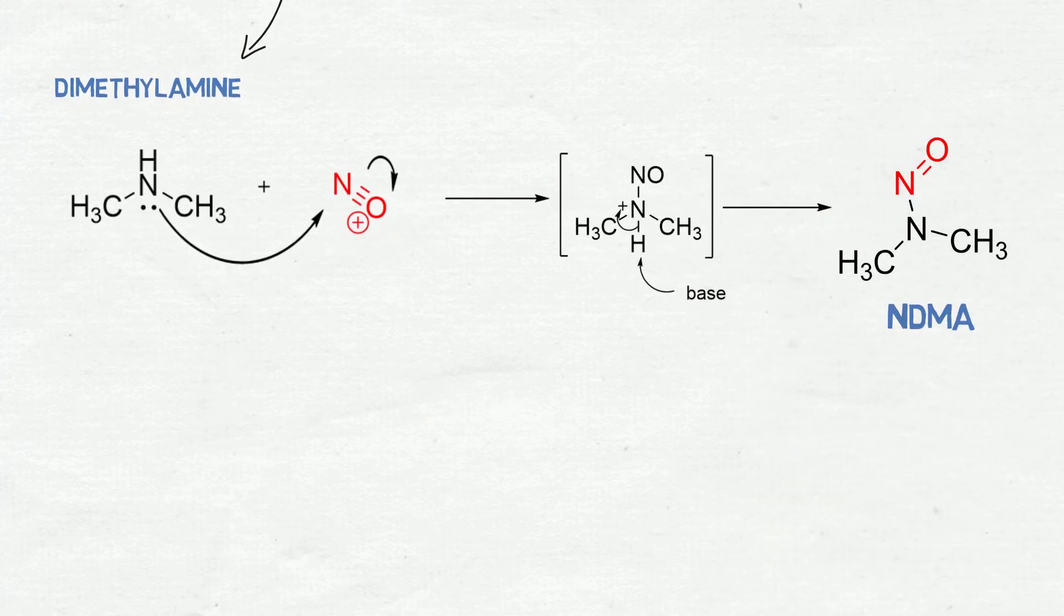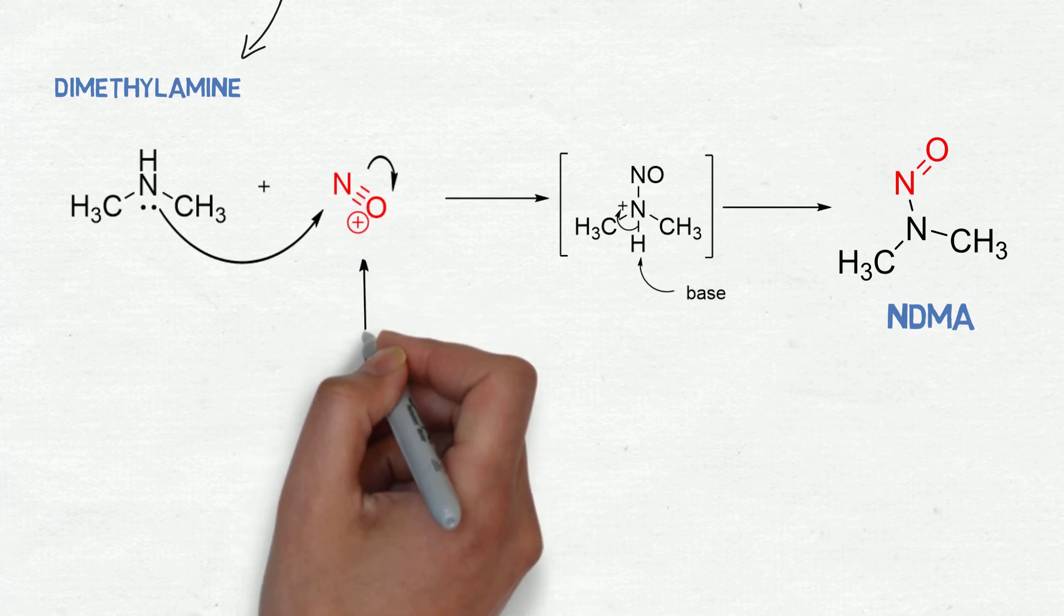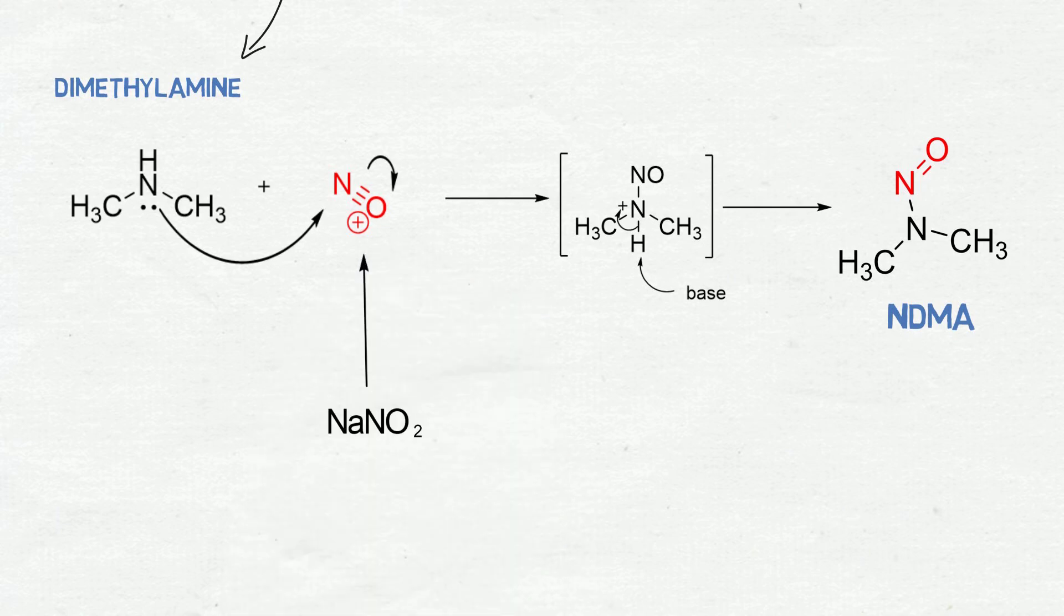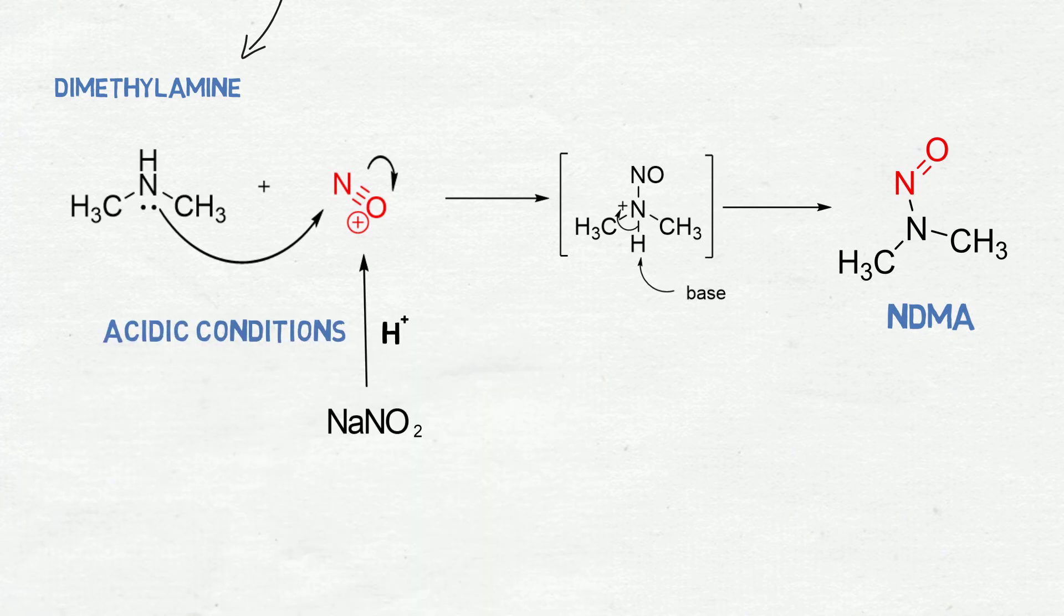However, to generate the nitrosonium, you must have a nitrosating agent. In this case, we are considering sodium nitrite. Then, in acidic conditions it is able to generate nitrosonium, and this reaction may proceed until it generates NDMA.